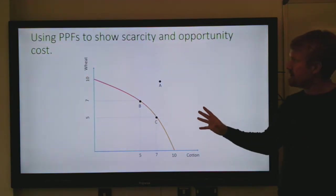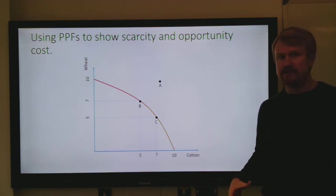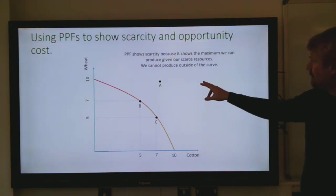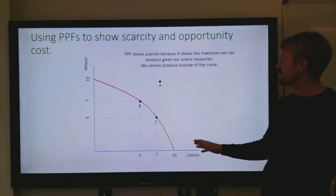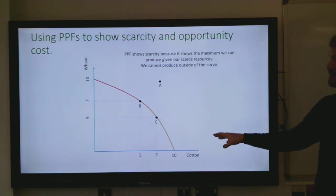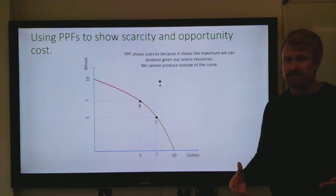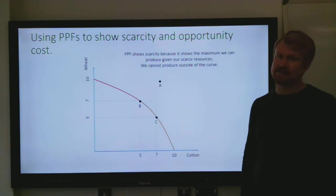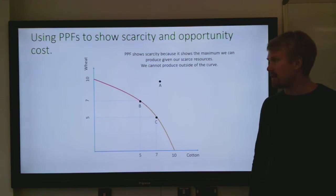Production possibility frontiers show scarcity and opportunity cost. The way that they show scarcity is that you cannot produce more than the production possibility frontier. It shows scarcity because it shows the maximum that we can produce given our scarce resources. We cannot produce outside of the curve — given the resources in our economy, this is our maximum line, and point A is outside of that line.